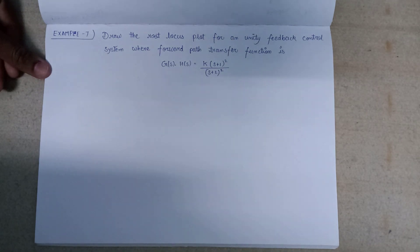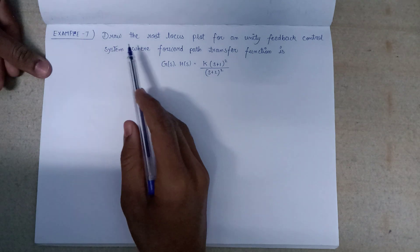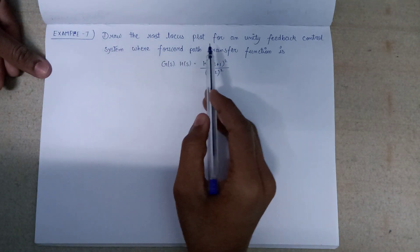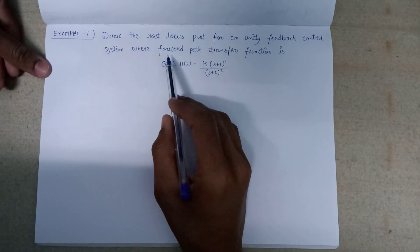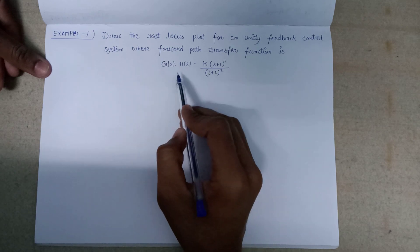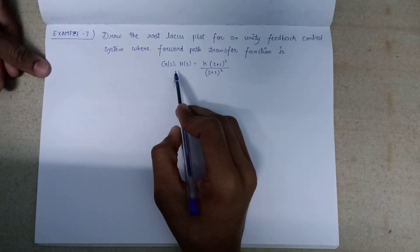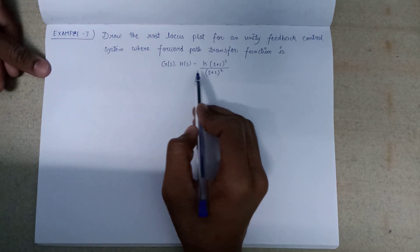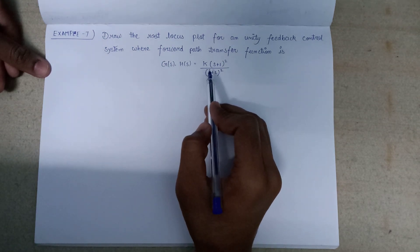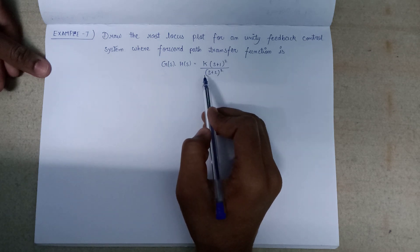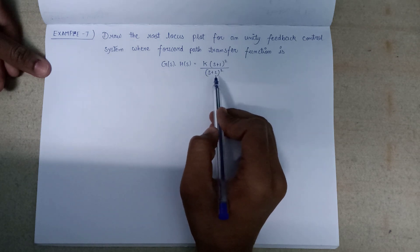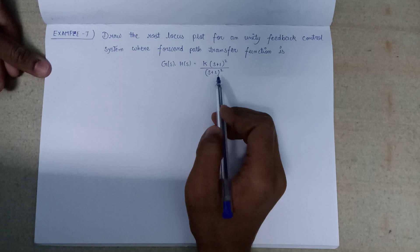Welcome all. In this lecture we are going to solve example number 7: Draw the root locus plot for a unity feedback control system where the forward path transfer function is given as G(s)H(s) = K(s+1)² / (s+2)².